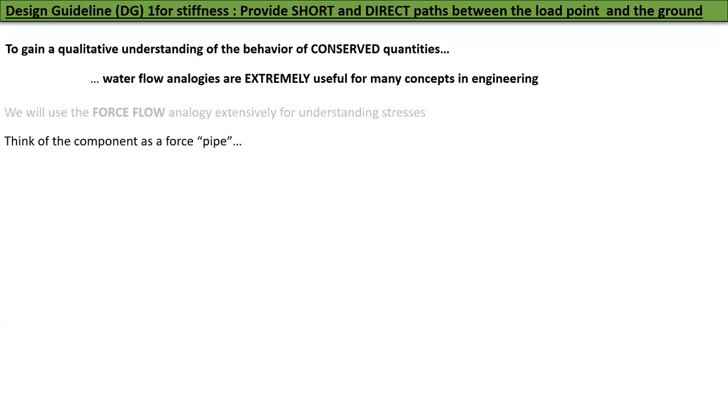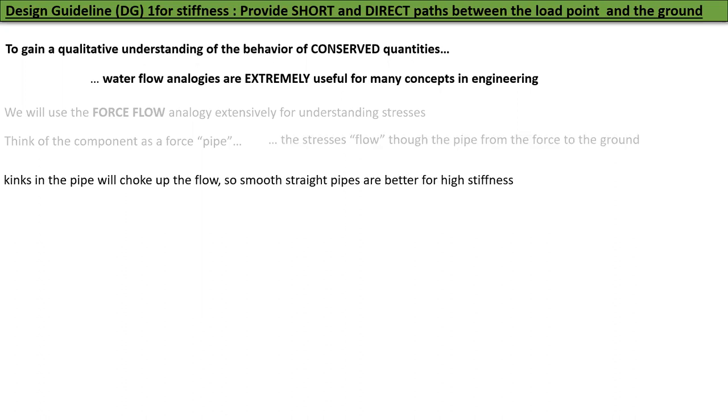Think of the component as a force pipe. The forces flow through the pipe from the force application point to the ground. Kinks in the pipe will choke up the flow, so smooth straight pipes are better for high stiffness.